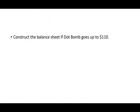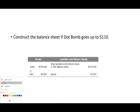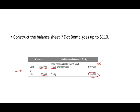Let's construct the balance sheet if the dot-com stock rises to $110. Originally, we shorted at $100 with $100,000 cash and $50,000 in treasury bills, with a liability of $100,000. Now at $110, the liability becomes 1,000 shares × $110 = $110,000.